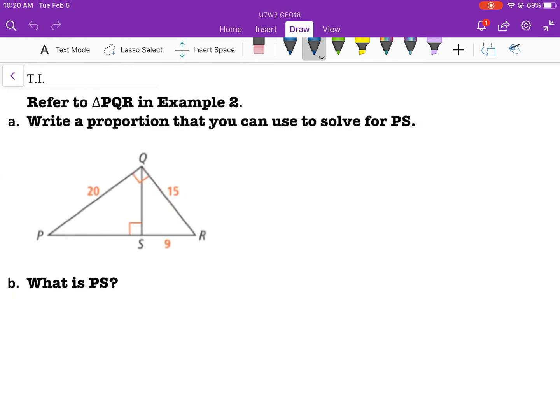Try it. Refer to triangle PQR example 2. Write a proportion that you can use to solve for PS. So we have triangle PQR. So now it's asking to use the big triangle, which is PQR. And it's asking us then to use the little triangle on the left.